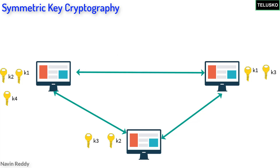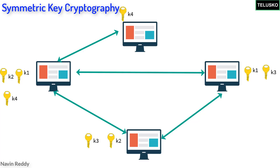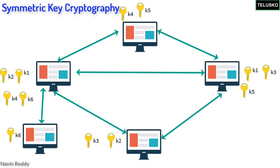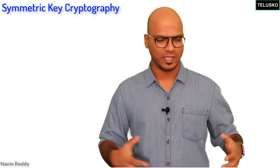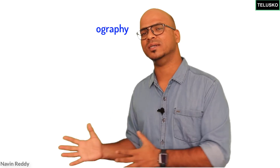The point is: as the number of users increases, we have to increase the number of keys, and it becomes difficult to manage. For example, in my pocket I would have to carry 100 keys if I want to interact with 100 people — I have to manage all those keys. We don't want that. That's one of the drawbacks of symmetric cryptography. So let's move towards asymmetric.